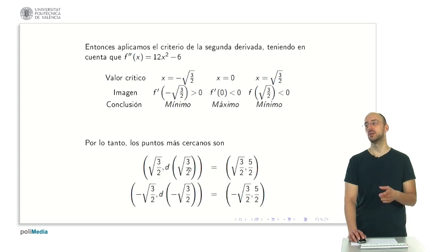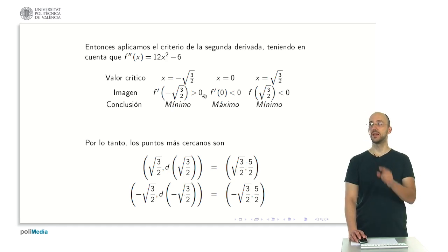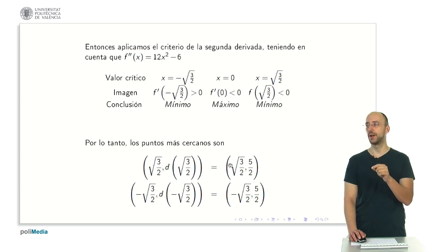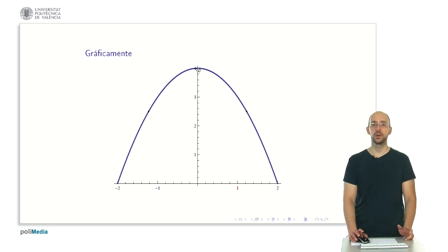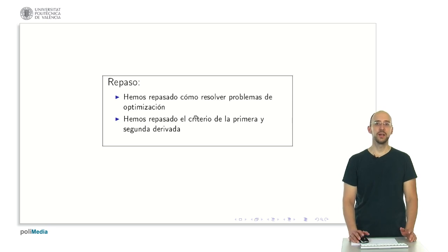The closest points correspond to x equals negative square root of 3 halves and positive square root of 3 halves, both yielding minimum distances. Graphically, these two points on the inverted parabola are closest to the point (0, 2). The point at x equals 0 is a relative maximum of the distance function — it is closer than distant points but not the nearest. I hope this information helps. If you need more practice problems or have any questions, please let us know. Thank you for your attention.